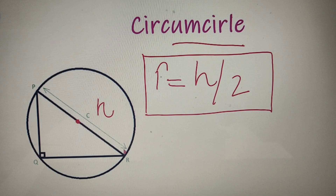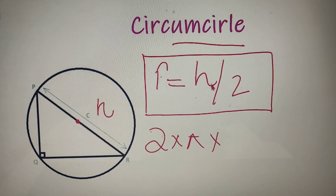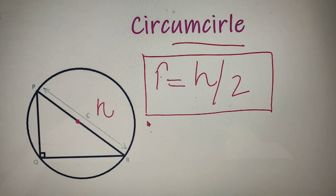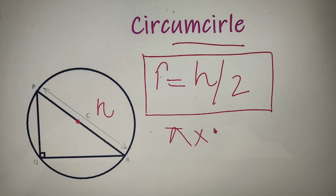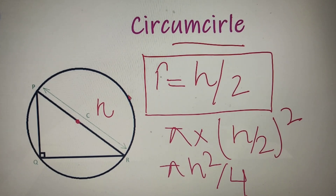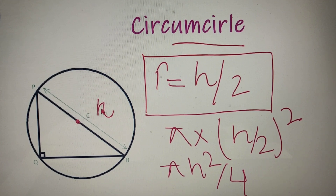Knowing the radius makes all other properties simple. The circumference of the circumcircle equals 2πr, and since r equals H/2, this simplifies to πH. The area of the circumcircle equals πr², which with r = H/2 gives πH²/4. You just need to remember that the center lies at the midpoint of the hypotenuse and you can easily derive the circumference and area.